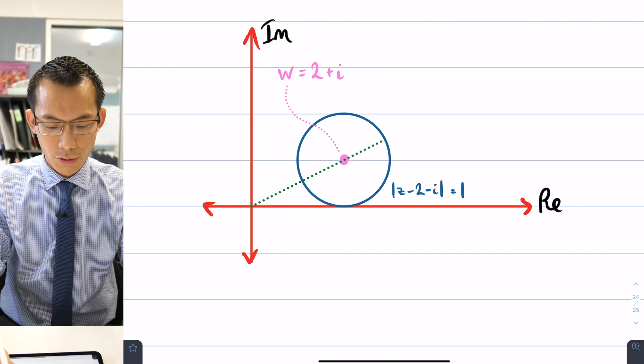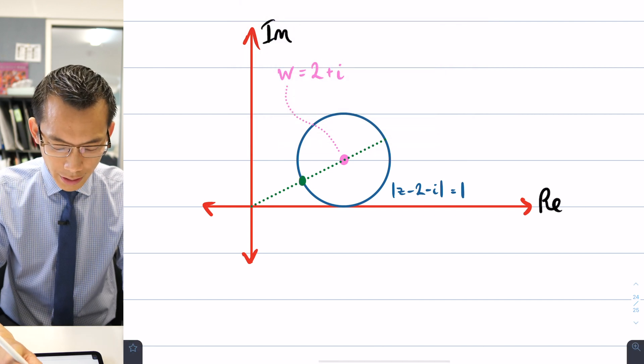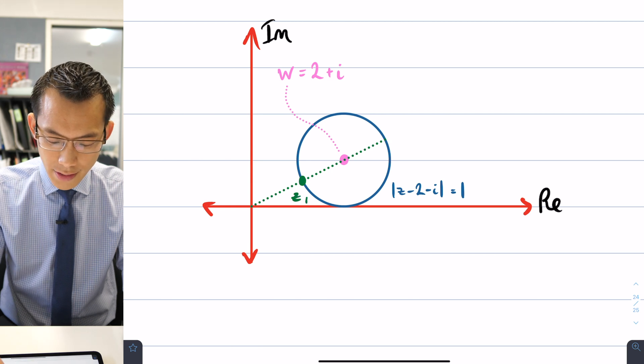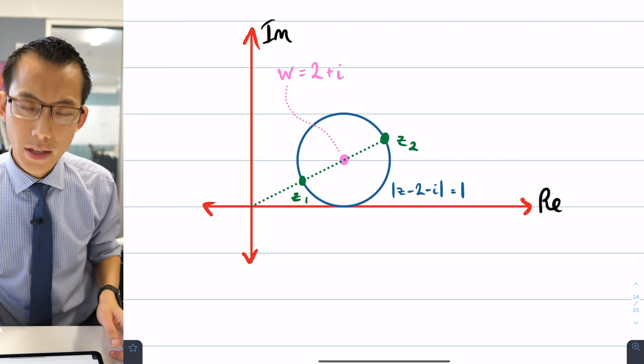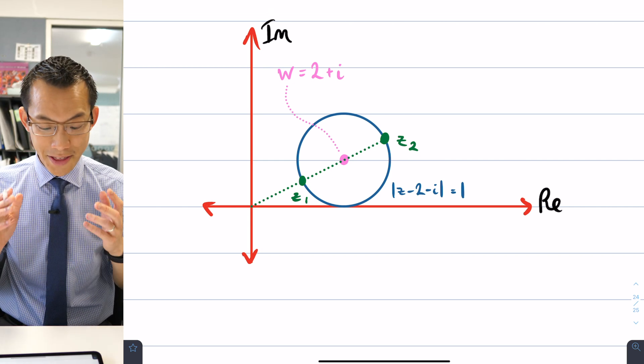So just so that I can talk about these in a little more detail let's just give these some names so I'm going to call this close one here let's call that one z1 and then I'll call this further point over here z2.